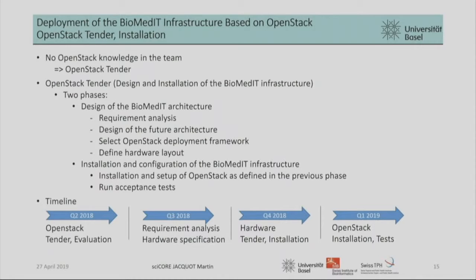The other problem was simple: OpenStack is nice, but we had no knowledge in the team — at least last year. Setting up infrastructure with no knowledge is not so easy and is generally proven to fail. So we decided to go for a tender to find an external partner to help us. The goal was to design and install the BiomedIT infrastructure. We defined two phases for the tender: the first was to design the BiomedIT architecture. We asked partners to come on site, made the requirements analysis, defined the architecture, tried to find an OpenStack deployment framework for easy rollout, and defined the hardware layout.